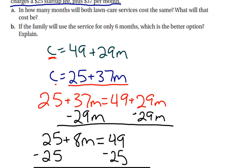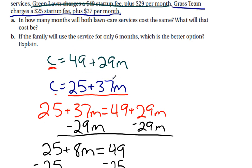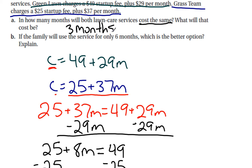M equals 3 means that at 3 months, both lawn care services cost the same. That's the point where their cost equations intersect. The problem also asks what that cost will be, so we need to substitute M equals 3 back into one of our equations and check our work.